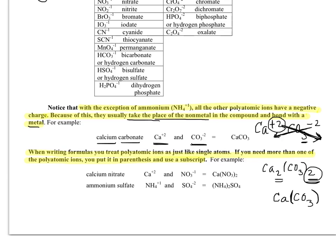So they have some more examples here and they remind you, as I just explained, that when you're writing formulas, you're going to treat polyatomic ions like they were single groups of atoms. And if you end up, when you swap and drop, needing more than one of the polyatomic ions, then you need to use parentheses and a subscript. So for example, with calcium nitrate.